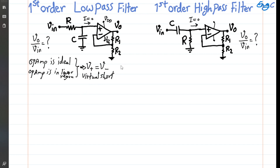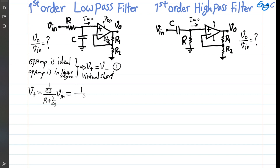Since the op-amp is ideal, its input impedance is infinite, so no current flows through the input port. As a result, we have a voltage division between R and C coming from Vin. The voltage at the positive input terminal of the low-pass filter circuit equals the impedance of the capacitor, 1/Cs, divided by R plus 1/Cs, times Vin — which simplifies to 1/(1 + RCs) times Vin. This is equation number two.